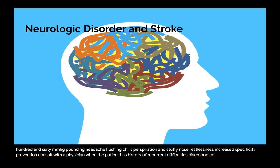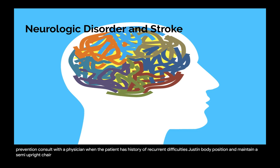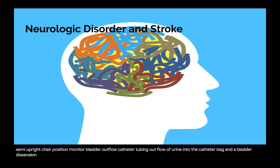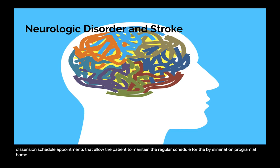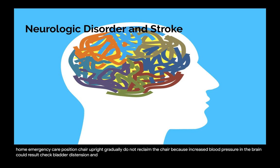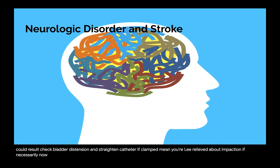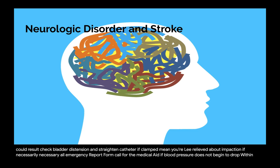Avoid abrupt changes in body position and maintain a semi-upright chair position. Monitor bladder outflow, catheter tubing, outflow of urine into the catheter bag, and bladder distension. Schedule appointments that allow the patient to maintain the regular schedule for the bowel elimination program at home. In an emergency, position the chair upright gradually. Check bladder distension and straighten catheter if clamped. Monitor the blood pressure and vital signs, and call for medical aid if blood pressure does not begin to drop within 2 to 3 minutes.